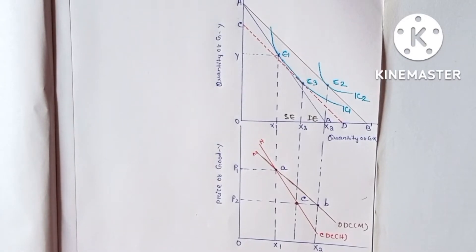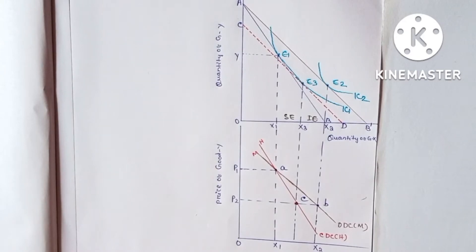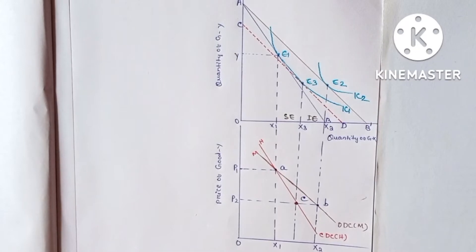An ordinary demand curve shows the effect of price on quantity demanded, inclusive of both the substitution effect and the income effect — that is, the total price effect. A compensated demand curve shows the relationship between the price of a good and the quantity purchased, on the assumption that prices of other relative goods and utility are held constant.